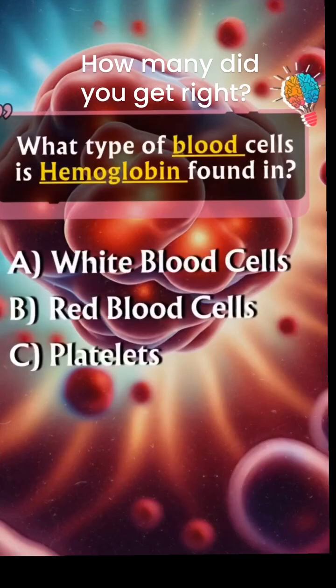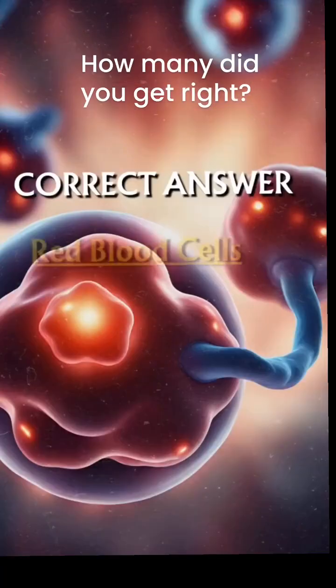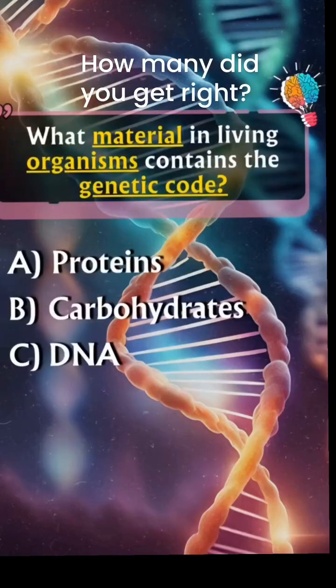What type of blood cells is hemoglobin found in? Answer B: red blood cells. What material in living organisms contains...